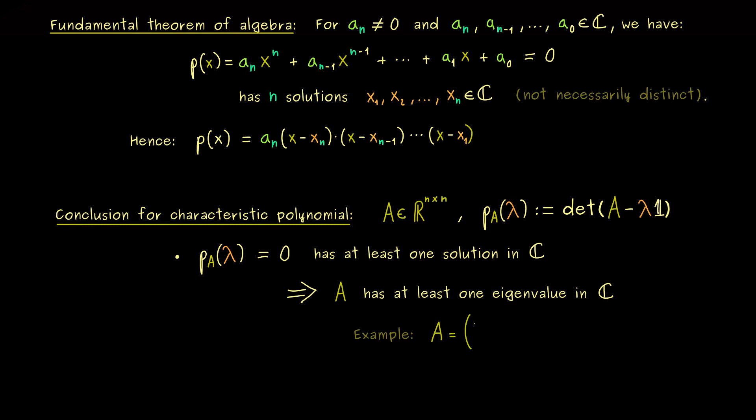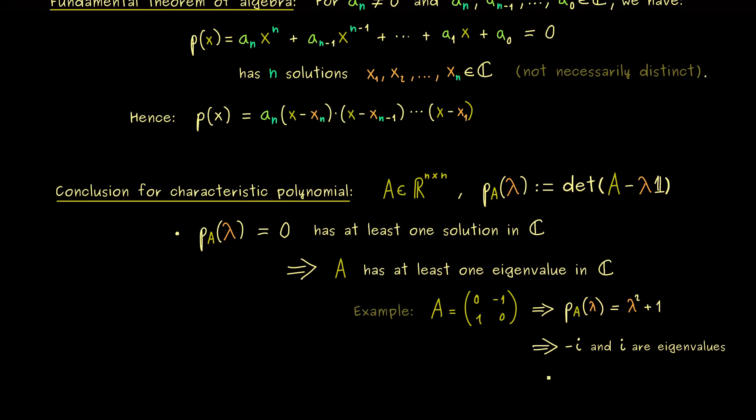Let's choose the 2 times 2 matrix given by (0, -1; 1, 0). For this one the characteristic polynomial is a quadratic function, namely λ² + 1. We immediately see it has no real zero. Indeed the 2 solutions we find are plus and minus i. So we could say the 2 complex numbers -i and i are the eigenvalues of this matrix. In fact in the future we will always do that. We will always include the complex numbers as eigenvalues.